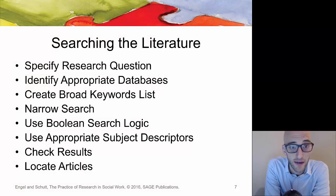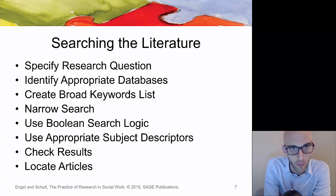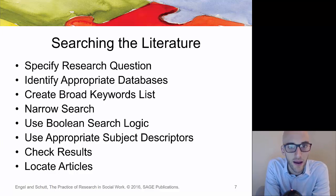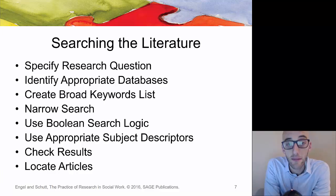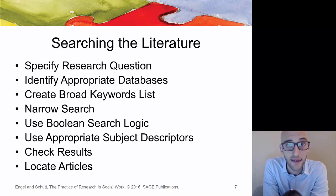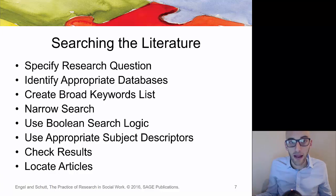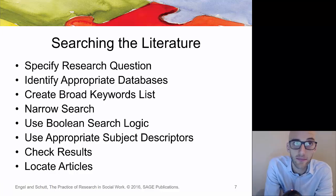Steps in searching for literature begin with coming up with a specific research question — we'll talk about that more later in the semester. Then identify appropriate databases. Come up with a broad keywords list, but also be able to narrow them down into something more manageable. If you get too many hits, narrow it down; too few hits, broaden it a little. Use Boolean search terms — inserting AND, OR, NOT within your terms.